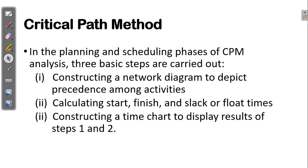In the planning and scheduling phases of the critical path method analysis, three basic steps are carried out: constructing a network diagram to depict precedence among activities, calculating the start, finish, and slack times, and constructing a time chart to display the results of steps 1 and 2.